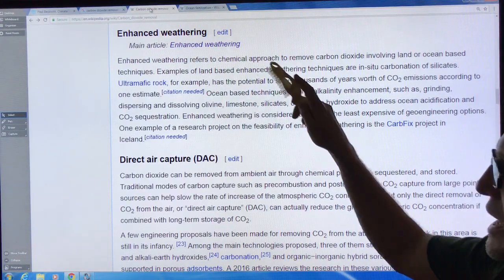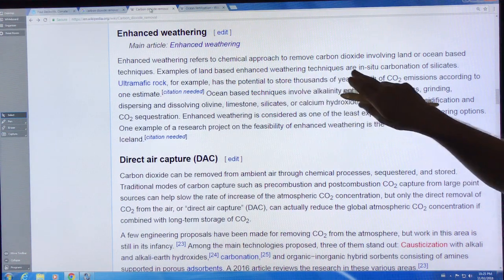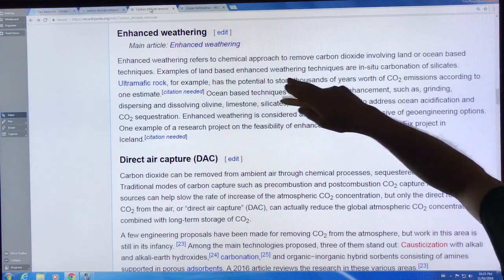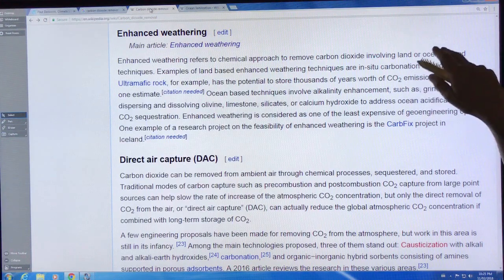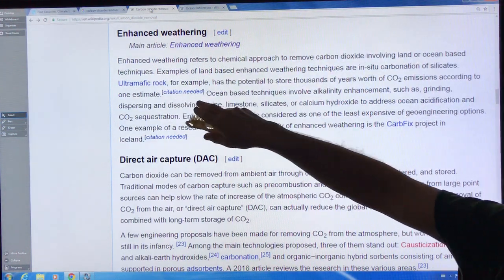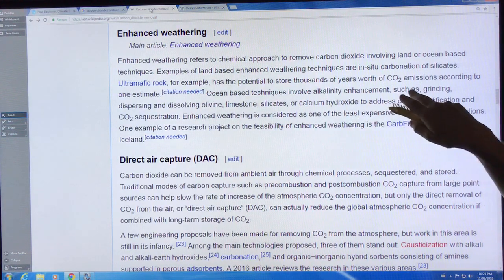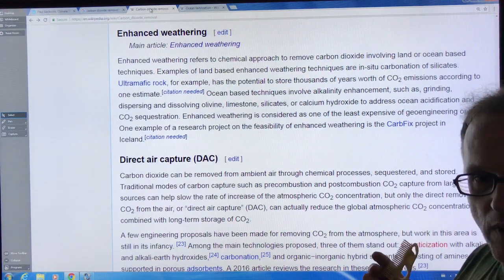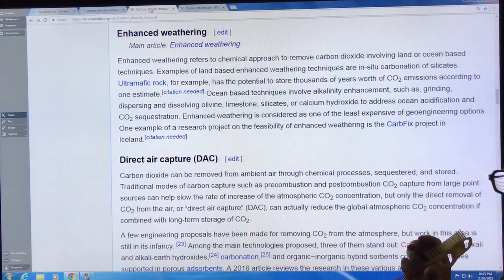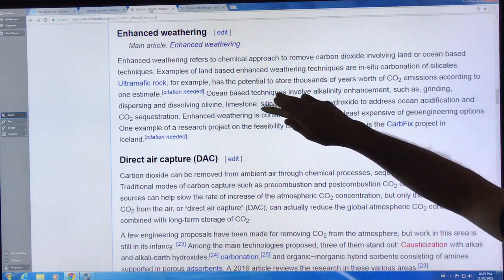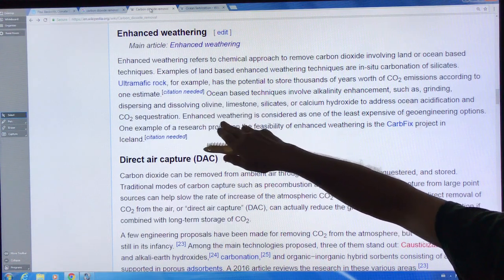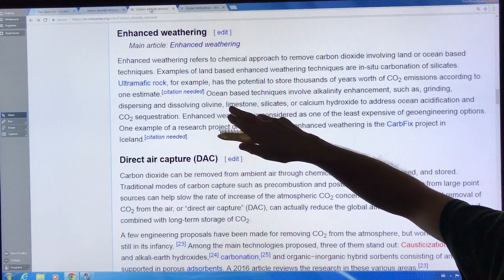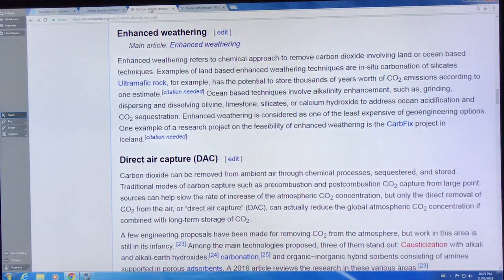If we can enhance or increase the rate of weathering, then that removes CO2. We could do it on the land or in the oceans. Land-based techniques involve in situ carbonation of silicate. If we take this rock for example, we can store thousands of years worth of CO2. We need to grind it up into small particles to get a large surface area to increase the rate of weathering. Ocean-based techniques involve alkalinity enhancement - grind, disperse, and dissolve. Olivine is one of the most promising minerals because it has a very high rate of reaction with CO2 and can convert it into rock where it's stored for a long period of time.